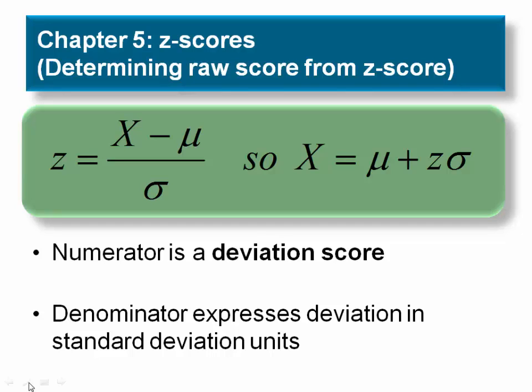On the right side of the slide is the formula you will use to transform z-scores back into raw scores. You will have some problems where you will be required to use this formula for either transforming raw scores to z-scores or z-scores to raw scores.